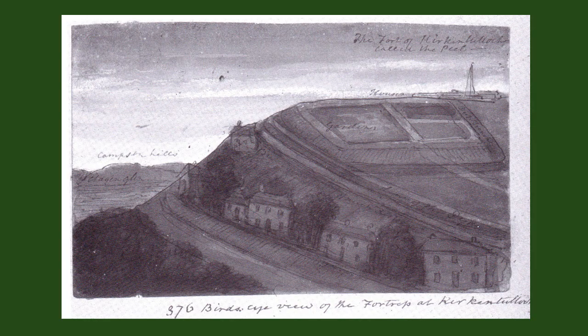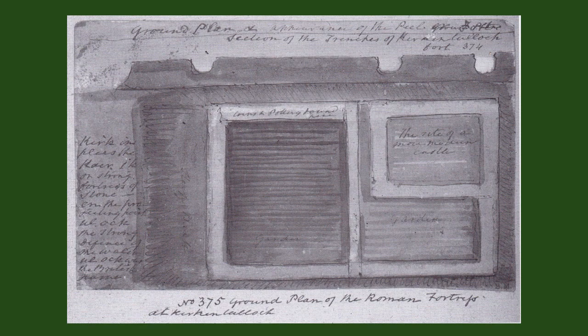Thanks to the good efforts of Professor Lawrence Keppie in publishing them, we can now access two drawings of the Peel prepared by an English clergyman, the Reverend John Skinner, in 1825. Skinner was really the first antiquarian to challenge the view that the features surviving in the Peel were entirely Roman. He suggested that the stone building near the south-east corner was more modern.